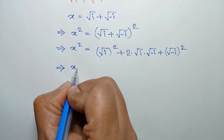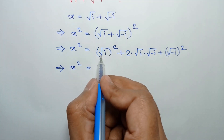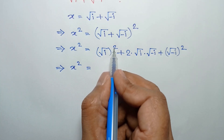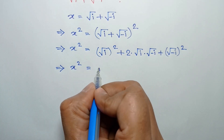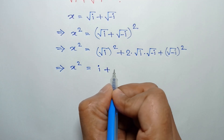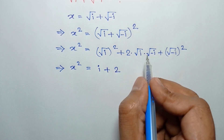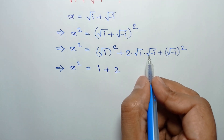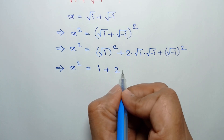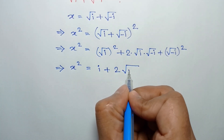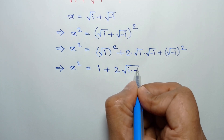So x squared is equal to — the square root and square cancel out — leaving i, plus two times square root of i times square root of negative i, which can be written as square root of i times negative i.